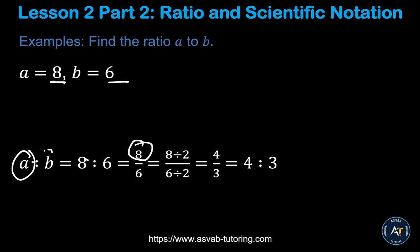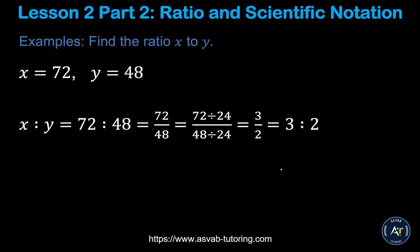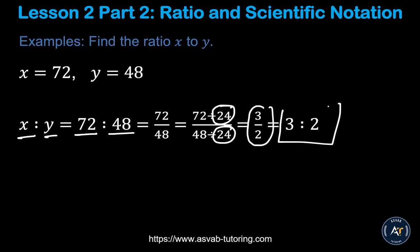Now you have to simplify. A ratio is the simplest form of a fraction, so you must simplify. If you divide both sides by 2, you get 4 over 3, so that is 4 ratio 3. Let's do another example: X equals 72, Y equals 48, so X ratio Y gives you 72 ratio 48. If you simplify by dividing by 24 top and bottom, you get 3 over 2 — so the ratio will be 3 ratio 2.